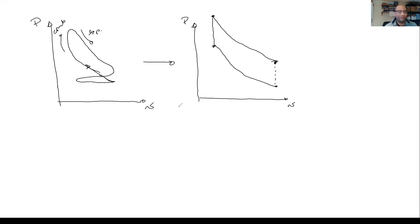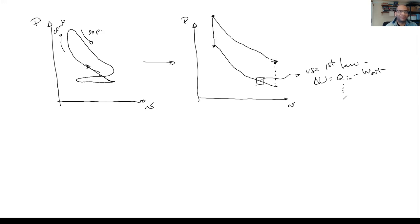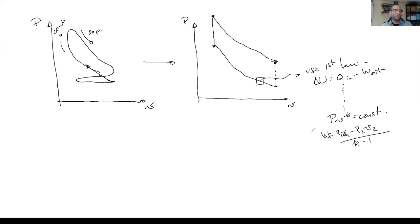What we did is apply the first law: for a closed cycle, the change in internal energy is equal to Q-in minus work out. After simplification, we found that PV to the K equals a constant, and that the work equals (P1·V1 minus P2·V2) over (K minus one). Those two equations are the first law applied to the process.